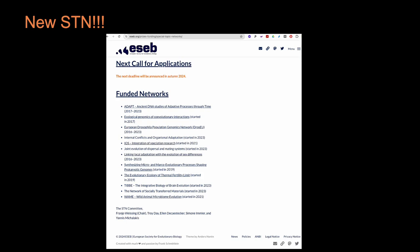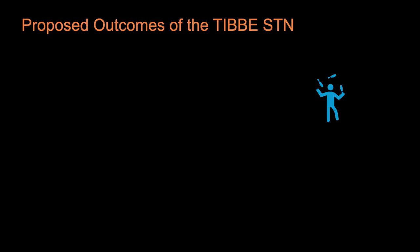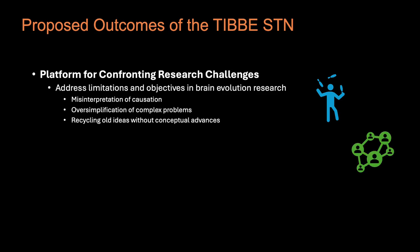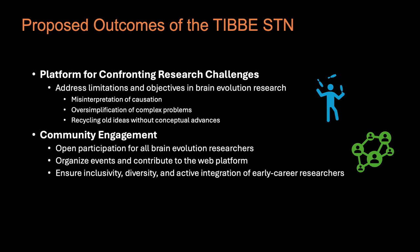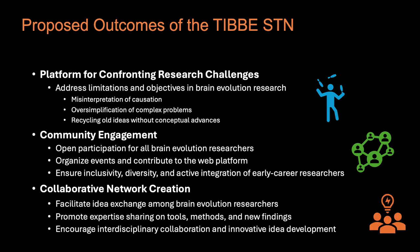Hello, this is Alexandra DeSouza. Our network is a new ESEB STN, having come together when we applied in 2023, and we are just getting started. Look out for us. Our aim is to address key research challenges in brain evolution through stronger collaboration within our community. We will create a platform for confronting research challenges for discussion to improve scientific understanding and approaches within our community and with adjacent fields. We strive for community engagement in a dynamic research environment with a focus on being open and inclusive, with a constant online interface. Through collaborative network creation, we aim to exchange ideas, share expertise, and encourage interdisciplinary work to drive innovation.